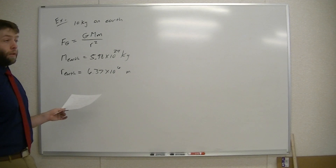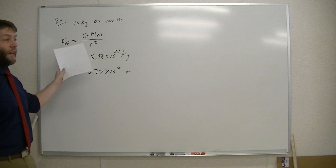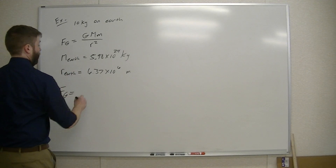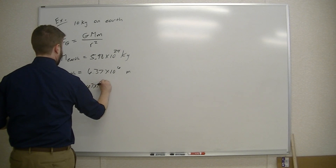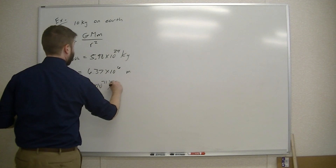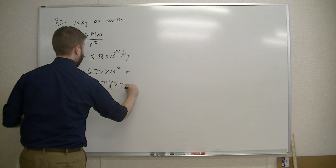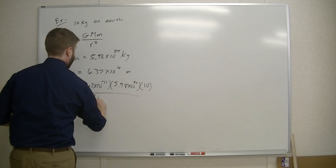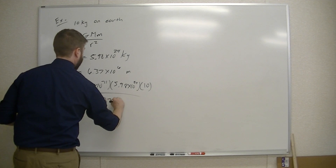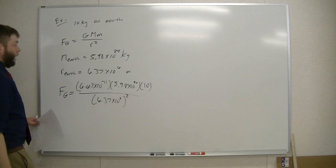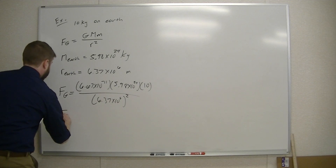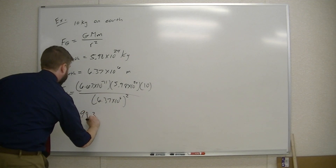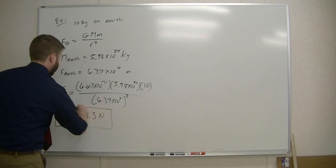So we're going to calculate the force of gravity on the 10-kilogram mass using this equation. The force of gravity is equal to 6.67 times 10 to the minus 11, multiplied by the mass of the Earth, 5.98 times 10 to the 24th, multiplied by the 10-kilogram object, divided by the radius, 6.37 times 10 to the 6th, squared. We get a force of gravity equal to 98.3 newtons.